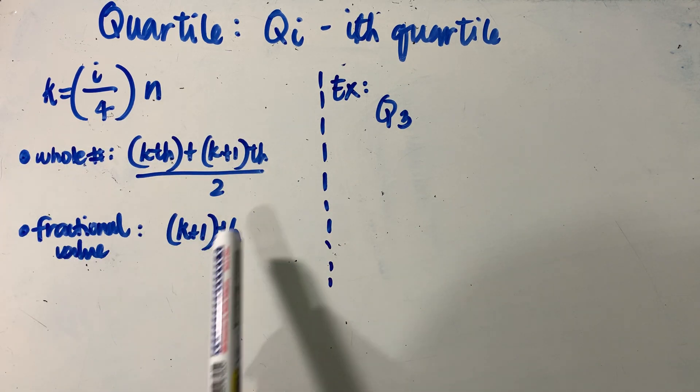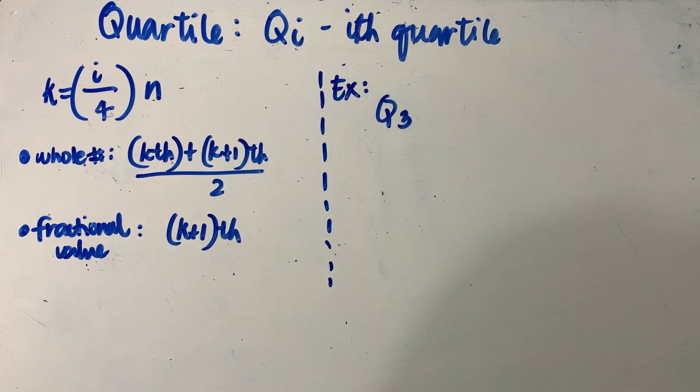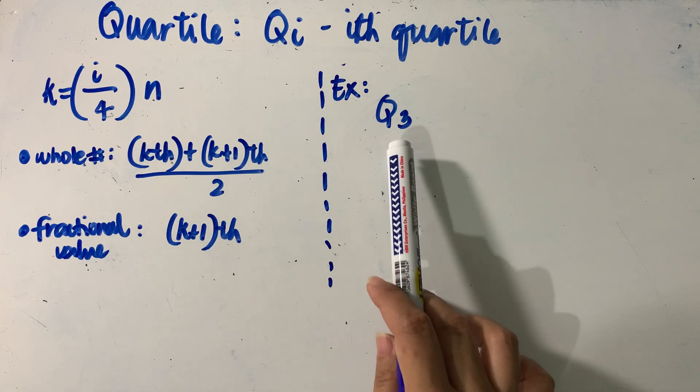We will maintain, we will follow the same scheme for the value of k, may it be a whole number or a fractional value. So for example, referring to the same set of distribution that we have involving the lives of the 40 car batteries expressed in years, let us look for the third quartile.